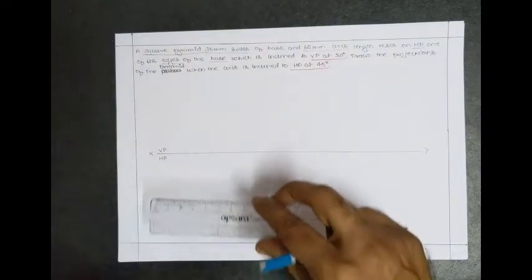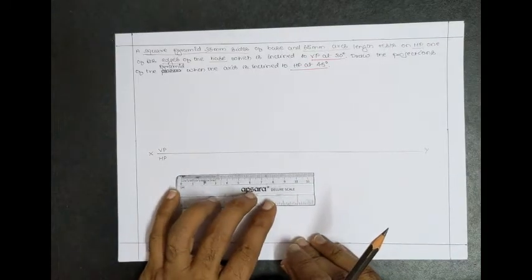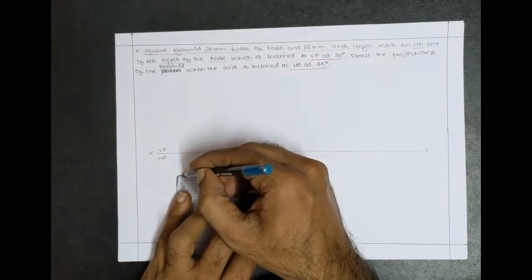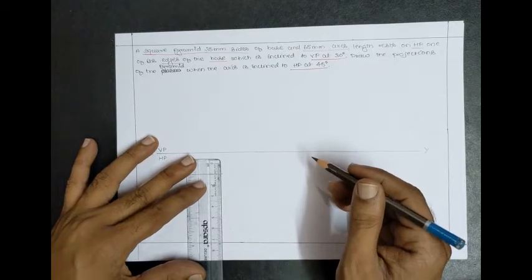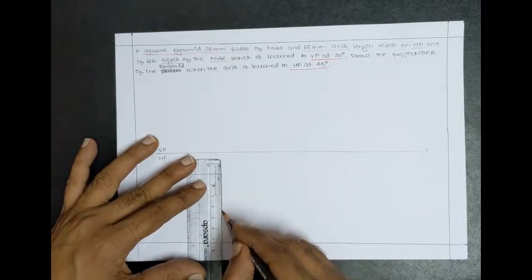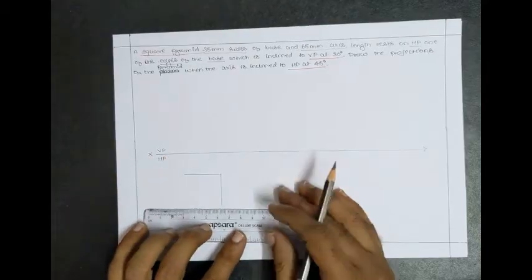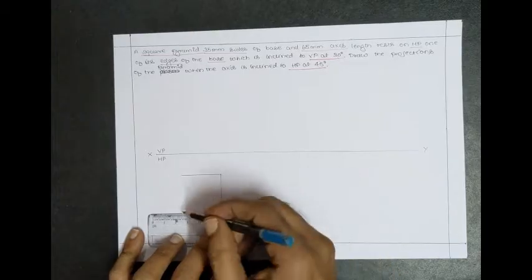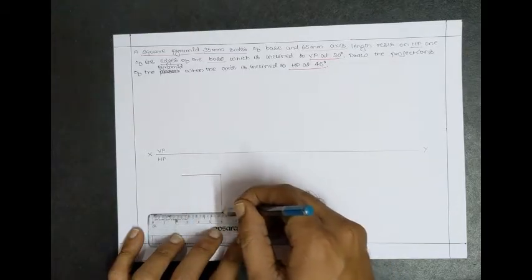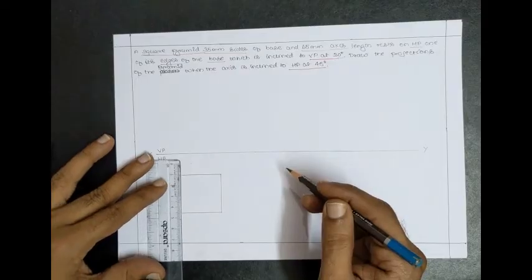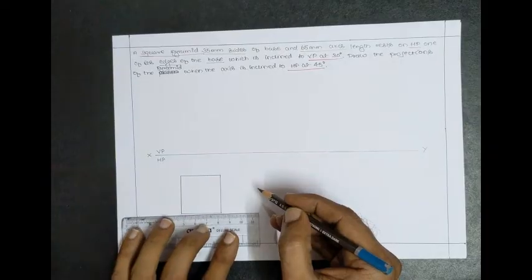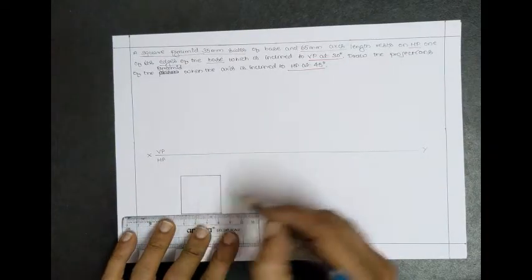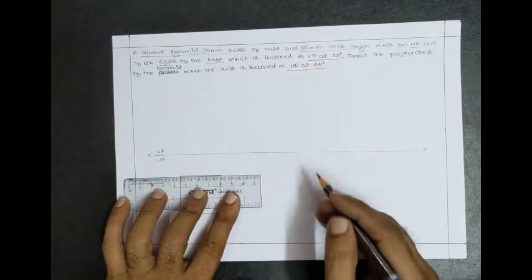Construct the square pyramid in the top view with a base side length equal to 35mm. Starting from here, measure 35mm, then again 35mm for the vertical side, then 35mm again, and finally close the square with the final edge of 35mm.